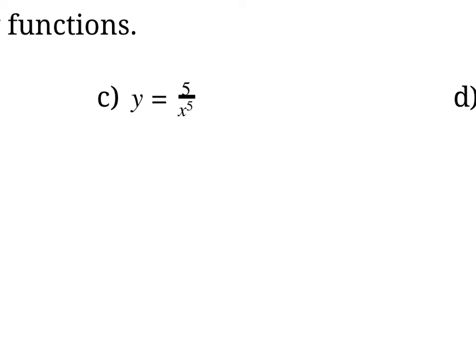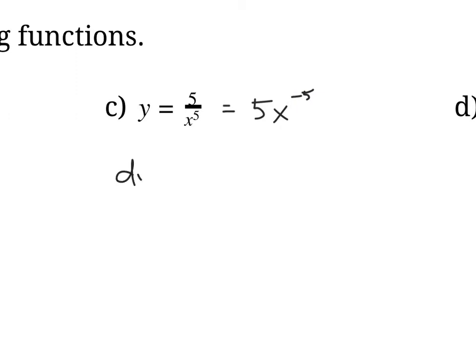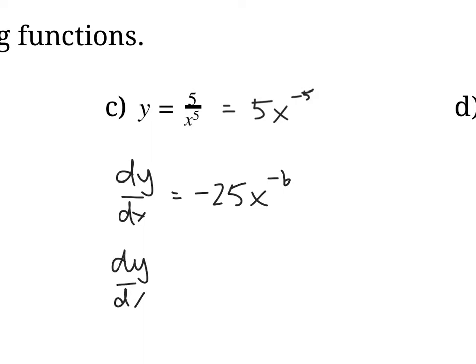For the next question, it's easier to write everything in the numerator first: 5 over x to the 5 is the same as 5 times x to the negative 5. Now applying the pattern, dy by dx: the negative 5 comes down and multiplies by 5 to give negative 25 times x to the negative 6. Writing with positive exponents, that's negative 25 over x to the 6.